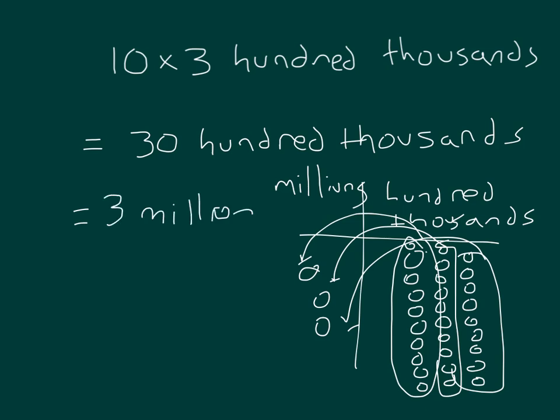Three million, which is written in standard form like this. You'll notice I just used part of a place value chart to really show you that it is just one place over. Typically, I would draw out the whole place value chart like I did on the previous page.